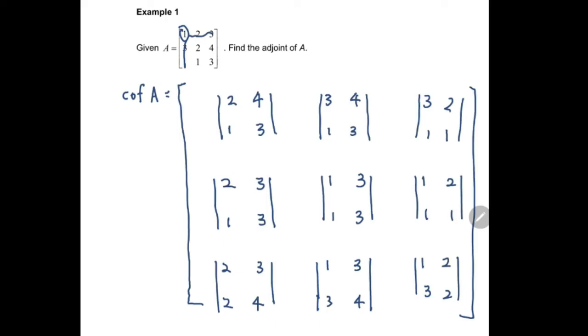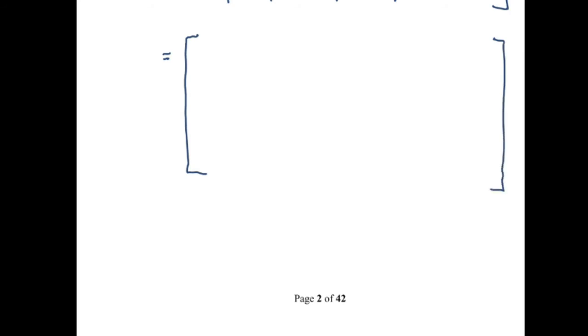Don't forget to apply the sign pattern for cofactors: plus, minus, plus, minus, plus, minus, plus, minus, plus. Then we solve each 2x2 determinant using the formula AD minus BC.